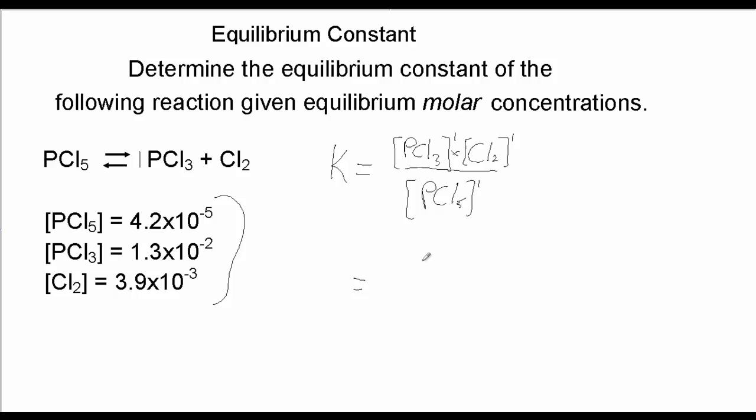So PCl3 is 1.3 times 10 to the minus 2. This is real important folks—you've got to remember to multiply these numbers. So it's times the concentration of Cl2, which is 3.9 times 10 to the minus 3.